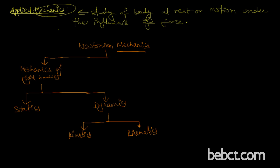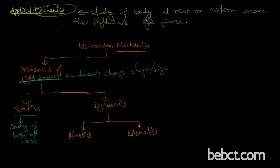Mechanics is the study of a body which is at rest or motion under the influence of force. Now let's define rigid bodies. A rigid body is that body which does not change its size, shape, or anything under the influence of any kind of force. Statics is the study of a body which is at rest, and dynamics is the study of a body at motion.